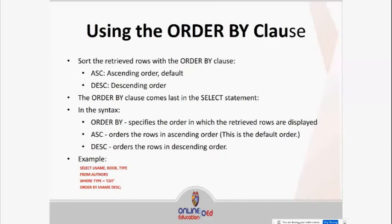Moving forward, the ORDER BY clause is used to sort retrieved rows. We have ascending and descending order — ascending is the default. The ORDER BY clause comes last in the SELECT statement. ASC orders rows in ascending order and DESC orders rows in descending order. For example: SELECT last_name FROM table WHERE condition ORDER BY column DESC.